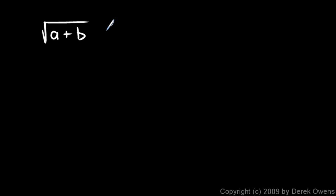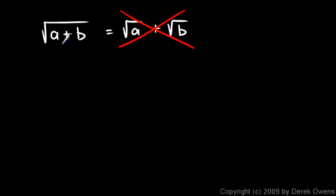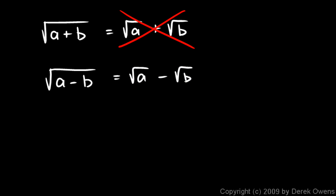Another important point: these concepts work for numbers that are multiplied or divided, but not for numbers that are added or subtracted. For example, the square root of A plus B cannot be said to equal the square root of A plus the square root of B — that is an error. You can't take two terms under the radical and separate them. The same thing with subtraction: the square root of A minus B does not equal the square root of A minus the square root of B. It works only if A and B are multiplied or divided.